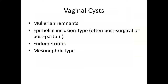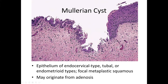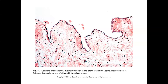Vaginal cysts occur in a variety of settings in addition to adenosis. Simple Müllerian remnants or mesonephric remnants can occur, as can epithelial-type inclusions (post-surgical or postpartum) and endometriotic cysts. A Müllerian-type cyst may show endocervical-type epithelium, or tubal/endometrioid types. A mesonephric cyst on the lateral wall — a Gartner's duct-type cyst — features very low cuboidal mesonephric epithelium, similar to what we'd see in the lateral wall of the cervix.